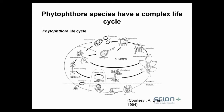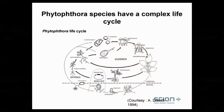The phytophthora life cycle is really important to understand from the perspective of how these microscopic organisms spread. They produce zoospores which actually swim through the soil — I'll show you a video of that in a moment. They also infect roots and organic material, and any time someone digs up an infected root — if a pig digs up a root infected with a phytophthora species and spreads it to a new bit of forest — they're spreading that phytophthora species.